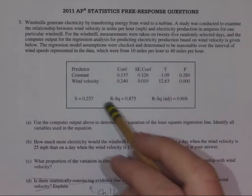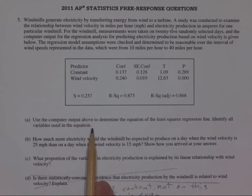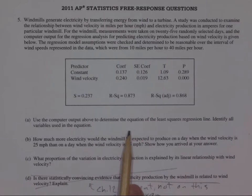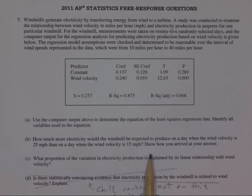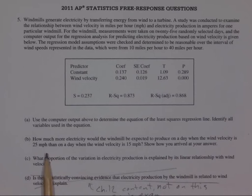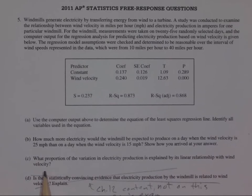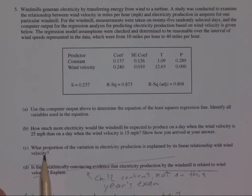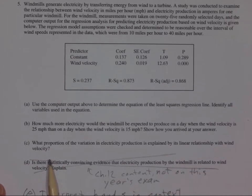Here's the computer printout. Part A says use the computer output above to determine the equation of the least squared regression line, identify all variables using the equation. Part B: how much more electricity would the windmill be expected to produce on a day when the wind velocity is 25 miles per hour than a day when the wind velocity is 15 miles per hour? Show how you arrived at your answer. Part C: